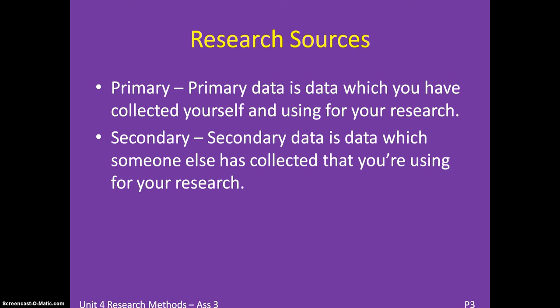There are two research sources: Primary and Secondary. Primary data is data you have collected yourself and used for your own research — you go out and collect it specifically for your study. Secondary data is data someone else has collected that you borrow and use for your research, perhaps obtained from the internet or from another person. The advantage of primary data is that it is specific to your research, giving you only the data you want, whereas with secondary data you have to scan through it and extract what you need, which takes time.